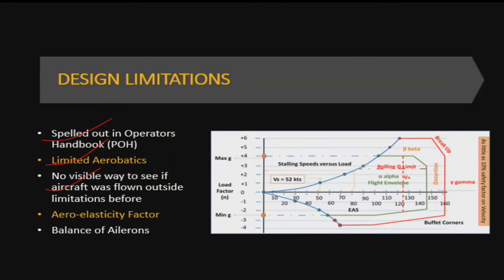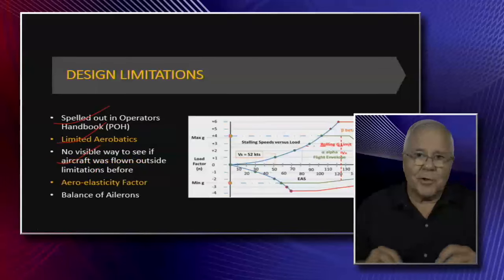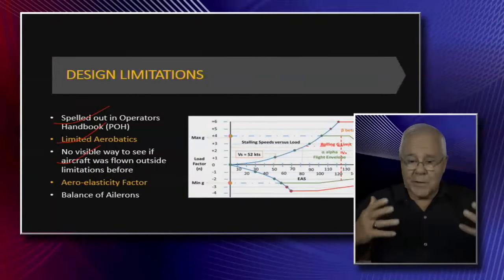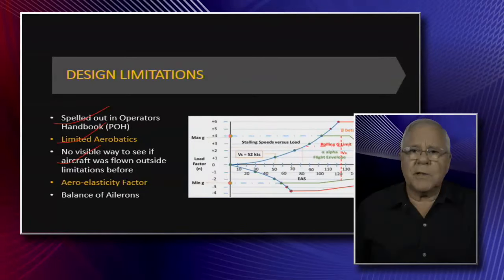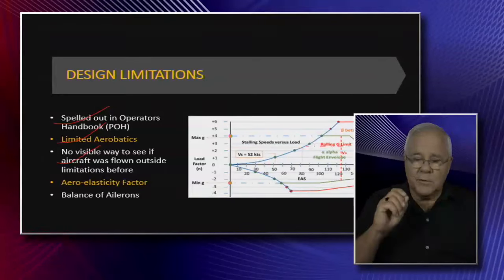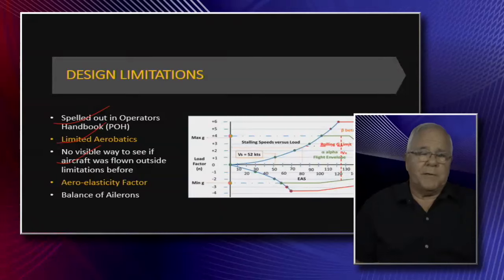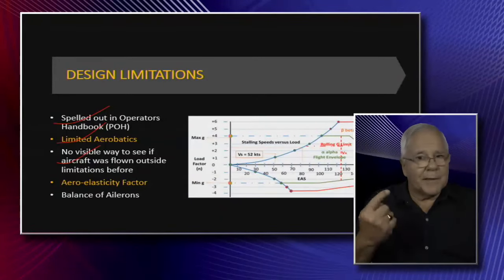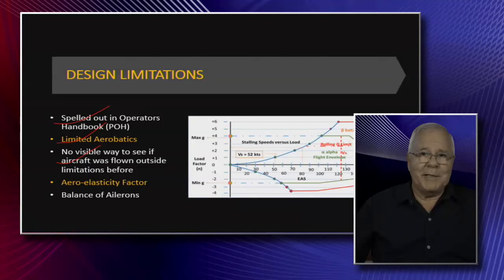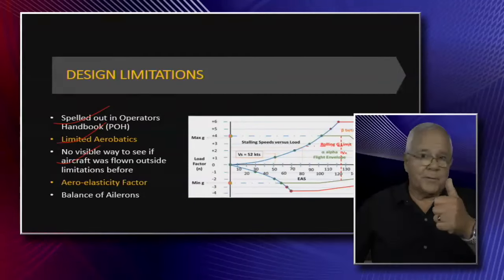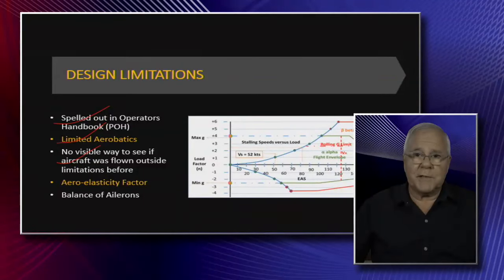Unfortunately there's no way to see if the aircraft was flown outside its limits. In this case, as far as I could ascertain, it doesn't have a G-meter, and definitely not one with memory to record peak G loads. That's an important lesson: if you've got an aircraft that others fly as well, get a G-meter with memory, because repeatedly over-stressing the aircraft in terms of G, VNE, and so on is a serious problem.